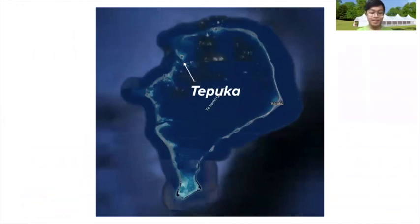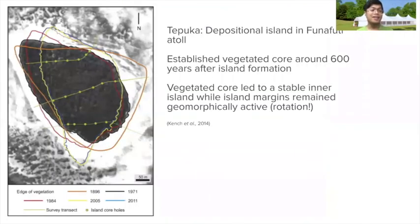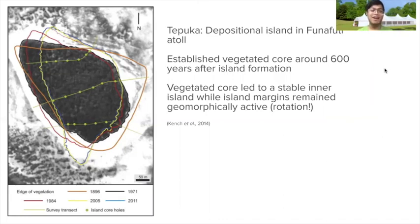To understand the timescale of biological colonization, we can look at the island of Tipuka in the Funafuti Atoll in the island nation of Tuvalu. Scientists dated sediment to determine when sedimentation and colonization occurred and used historical maps and imagery to track how the island shape changed over time. By dating the sand, they found that sediment in the vegetated, stable core of the island dated to around 600 years after the island's formation — meaning it took about 600 years for the island core to become vegetated and for succession to occur. They also found that the island was apparently rotating: because the core was stabilized by vegetation, the outer fringes eroded and aggraded at different rates, leading to rotation of the island.